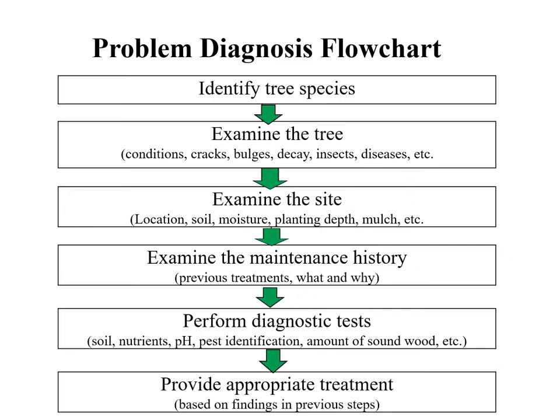Here is a diagnostic flow chart to help guide your tree evaluation. First, identify the tree species. Then examine the tree itself systematically — look for conditions, cracks, bulges, decay, insects, diseases, and any other contributing factors. Examine the site: what is the soil, moisture availability, was the tree planted too deeply, was it mulched? Examine the maintenance history: what previous treatments were applied and why? Then perform diagnostic tests — what is the soil pH, what is the pest identification, how much sound wood is available? Based on all your findings, provide an appropriate treatment.